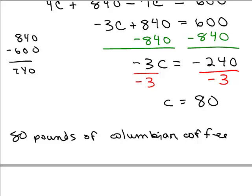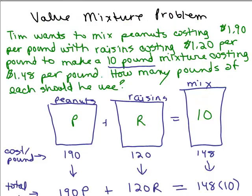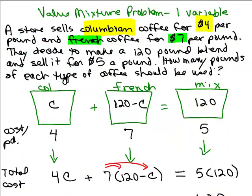So let's go back up to the problem here. All right, so here's our problem. We had the value mixture problem. We had Colombian coffee and French, and we knew we had a 120-pound blend. So remember there were 120 pounds total? So if C was 80, 80 plus what will give you 120. That should tell you how much French coffee. So that would be 40 pounds of the French.